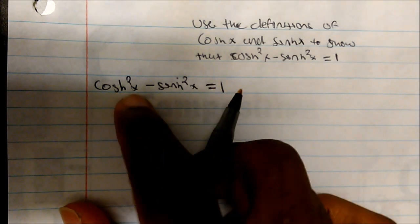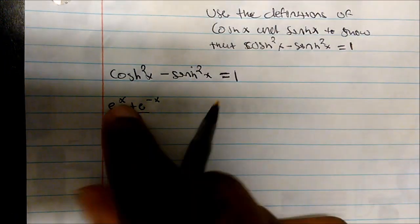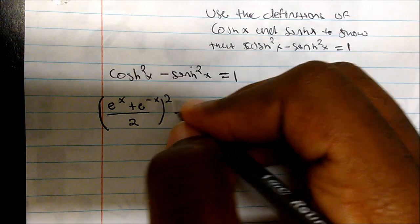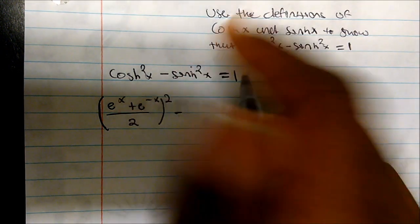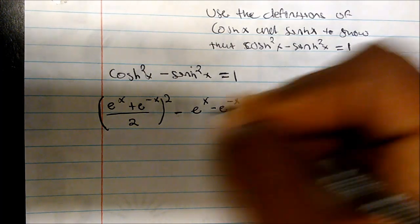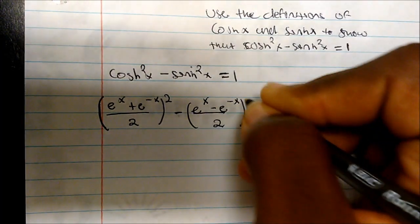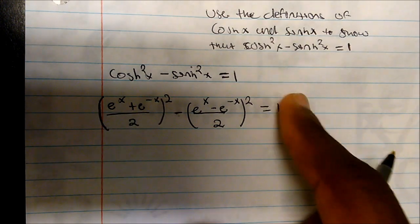What's the definition of cosine hyperbolic x? We know that to be e to the x plus e to the negative x, divided by 2. That's our definition, and it's squared. And we simply subtract from that the definition of sine hyperbolic x, which is e to the x minus e to the negative x divided by 2, and we square that.